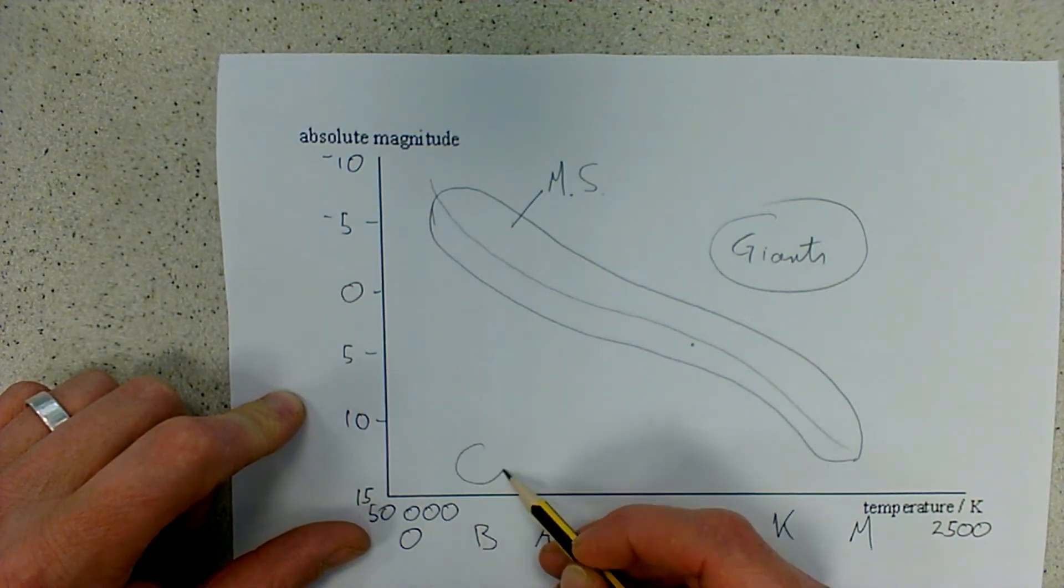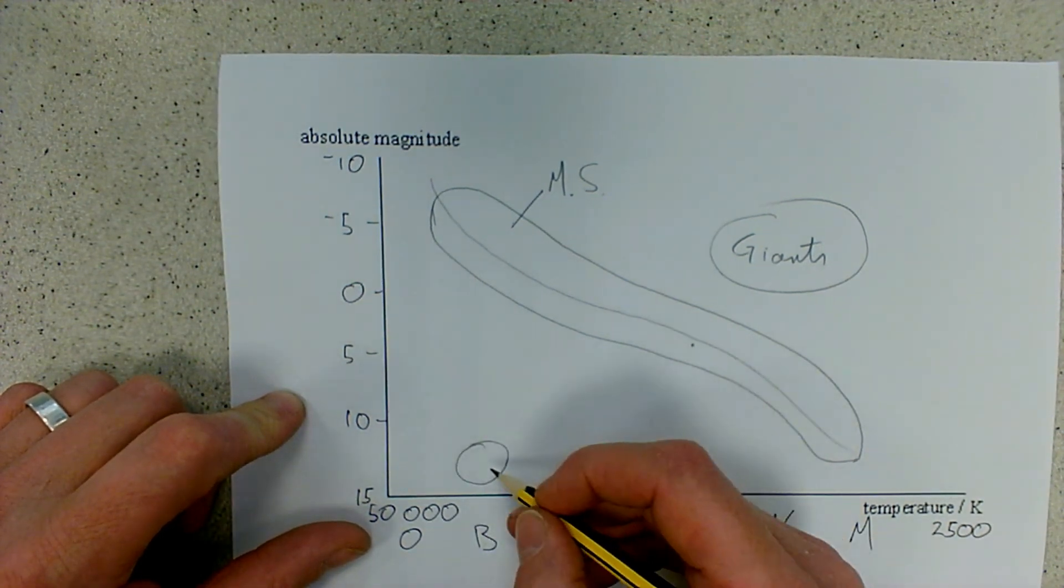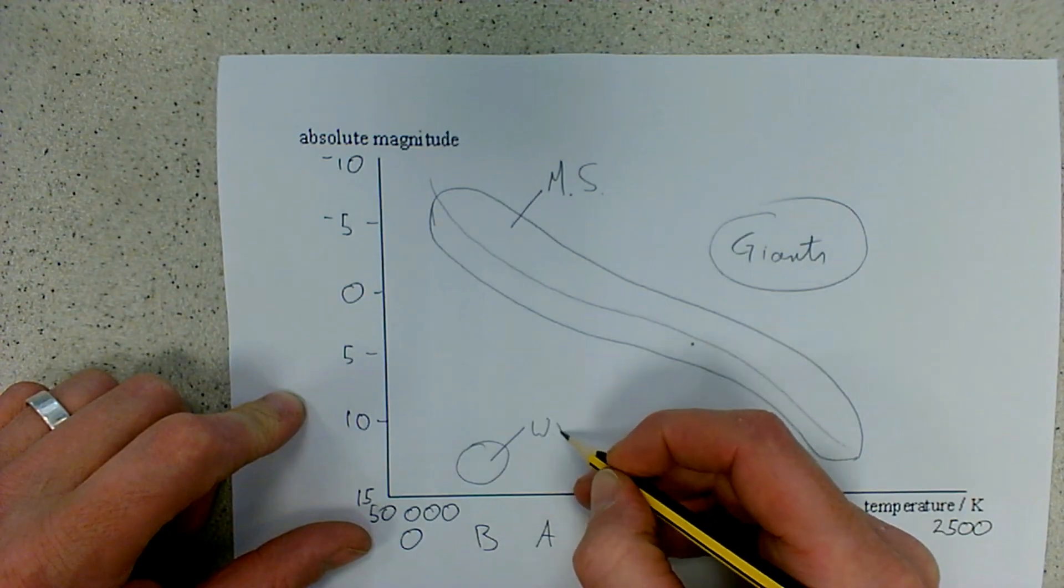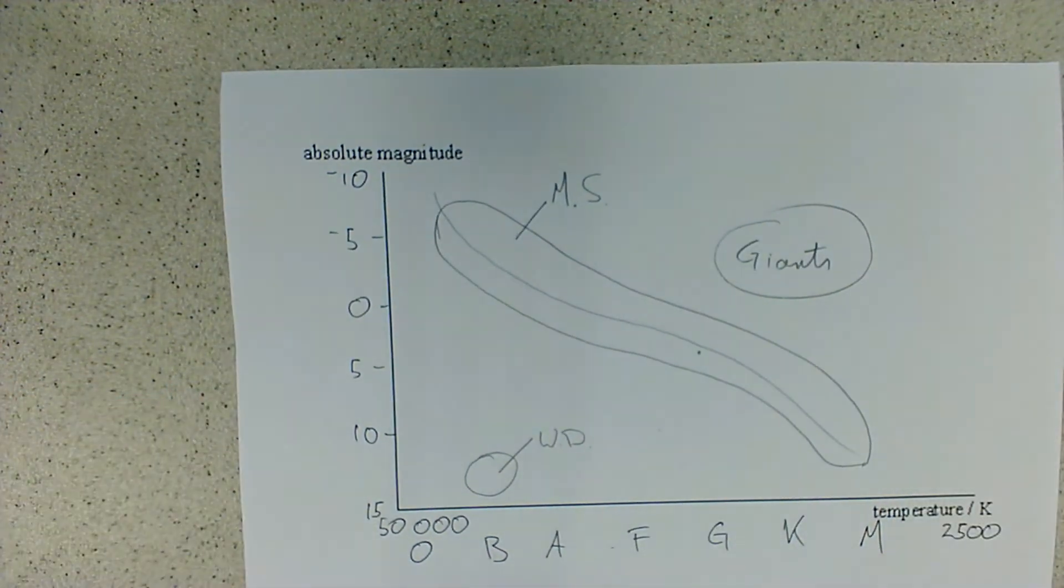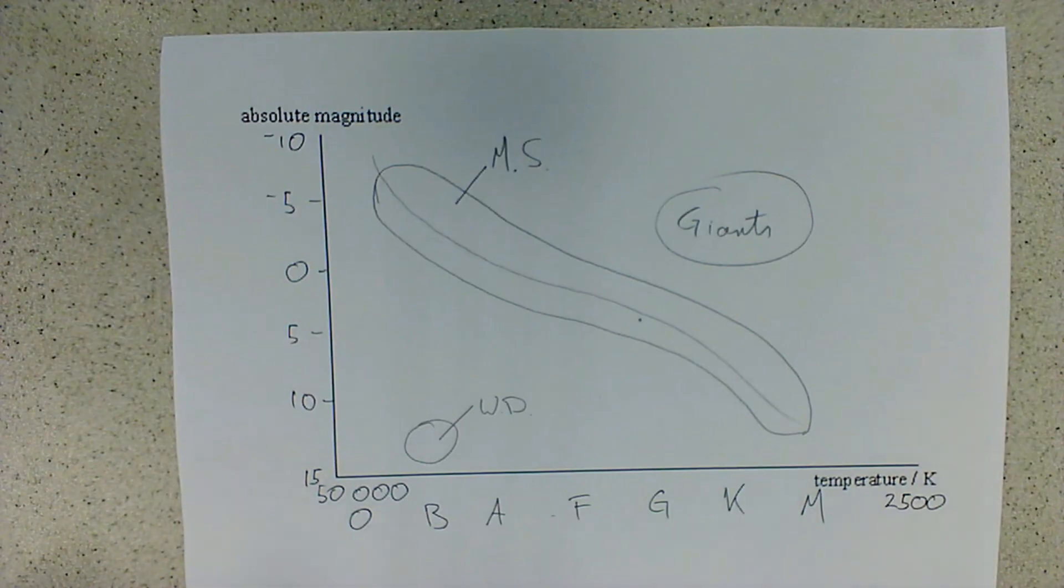And then down here we have some very dim but hot white dwarfs. So those are my white dwarf stars. And that's the basic structure of the Hertzsprung-Russell diagram.